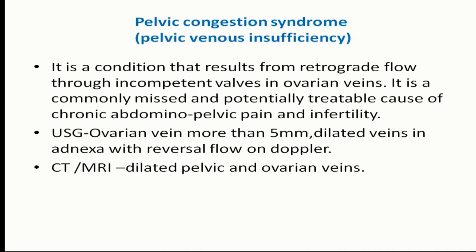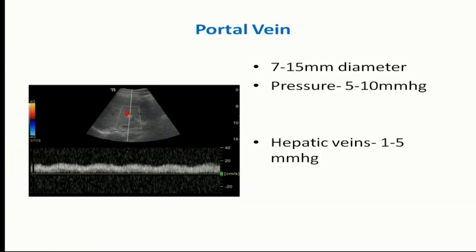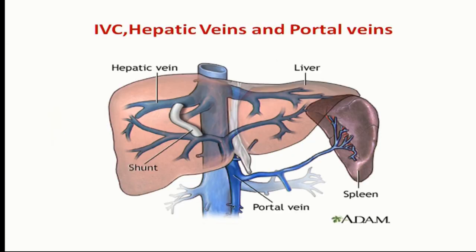Regarding gonadal flow: varicocele is one condition, and pelvic congestion syndrome in the female and varicocele in the male — these two conditions are very common and should be kept in mind for normal Doppler and CT angiography. Coming to the portal vein: diameter is very important — 7 to 15 mm. Pressure is low, less than 10 mmHg; more than 10 is portal hypertension.